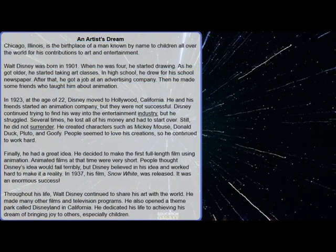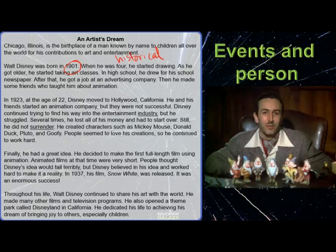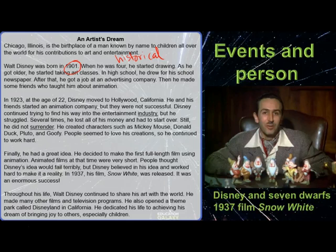Next we have 'An Artist's Dream.' When you see the date 1901, you know it is talking about a historical figure — and a fun one, because it is Walt Disney. This text talks about Disney and the Seven Dwarves from his 1937 film Snow White. This was his first hugely successful film. Disney's dream was to be successful while making art, and this movie was his first big success — that's how the events and people are related in this article.